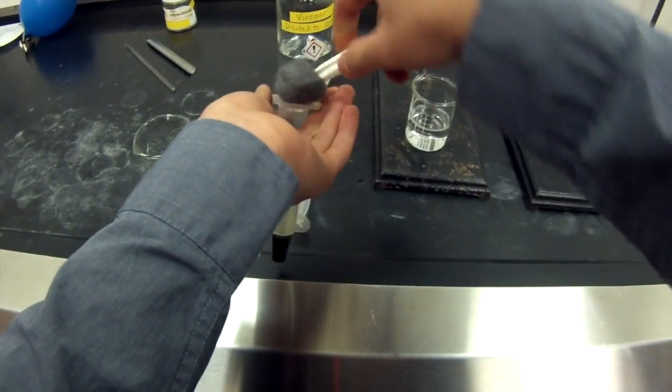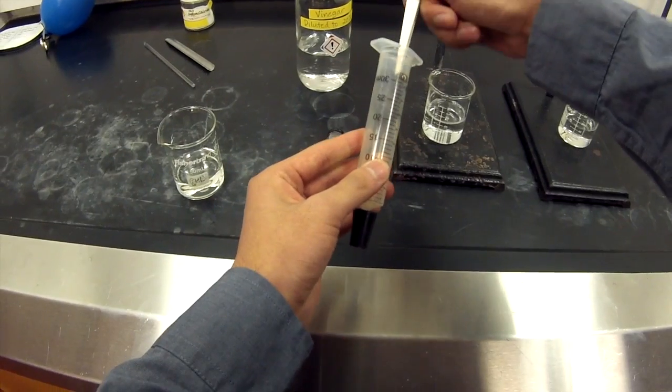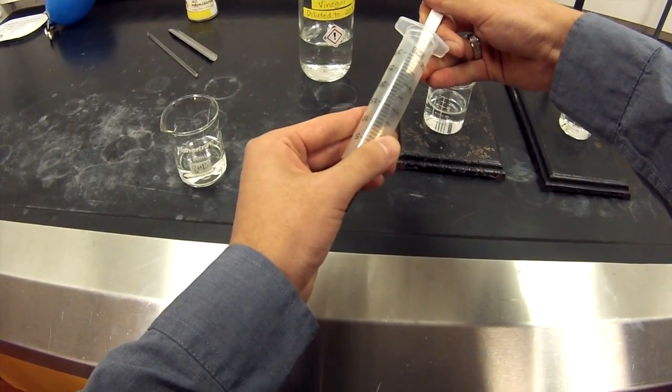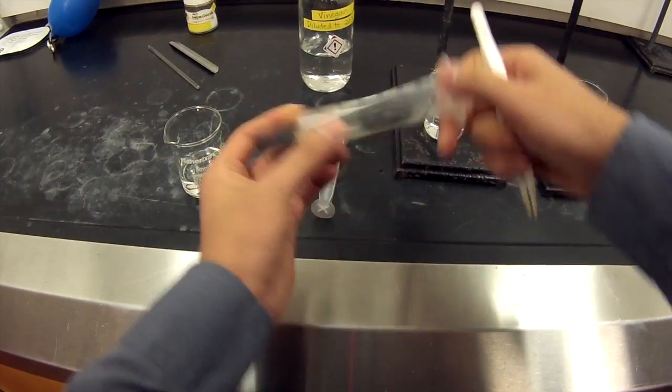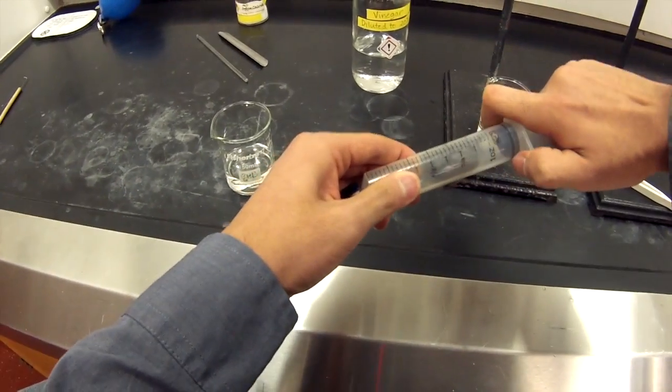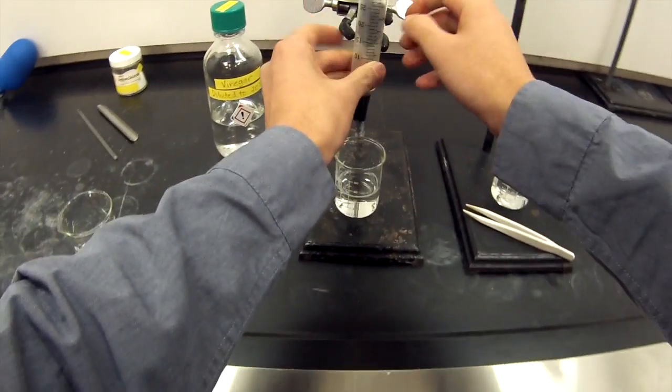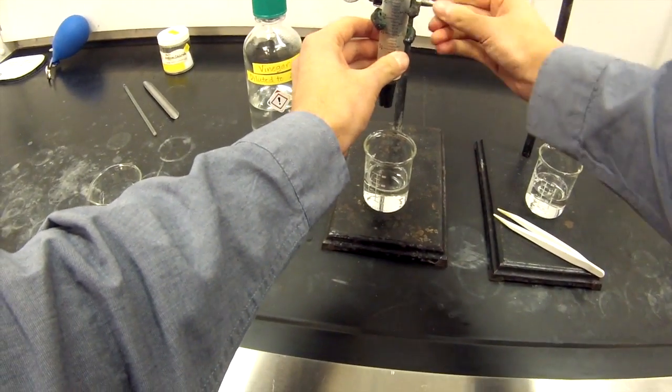Then we're going to take our steel wool and push it down into the syringe between about the 10 milliliter and 30 milliliter mark. Somewhere in between there should be fine. It doesn't have to be exact. And then we're going to take the tip of our plunger and insert that back into the main body and push it down to about the 28.5 or 28 milliliter mark. Again, it doesn't have to be exact.